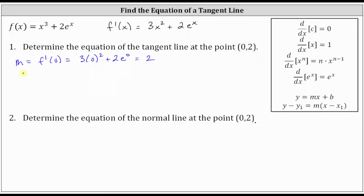So now we know the slope of the tangent line is two at the point zero comma two. We're fortunate here because zero comma two is the y-intercept, which means for slope-intercept form, b is equal to two. We're not always given the y-intercept, but in this case we are, which makes the problem a little bit easier. Using slope-intercept form, the equation of the tangent line at the point zero comma two is y equals two x plus two.